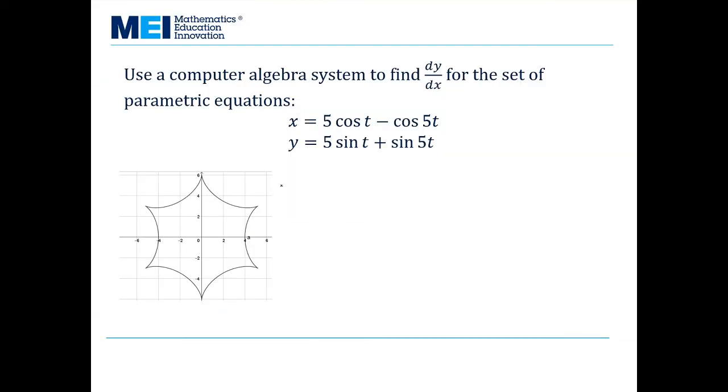So the first thing that I'm going to write down is dx/dt, which my CAS worked out was minus 5 sin t plus 5 sin 5t.